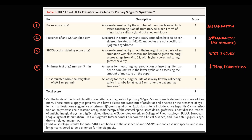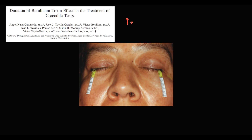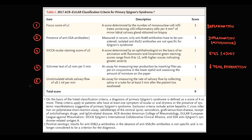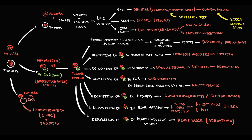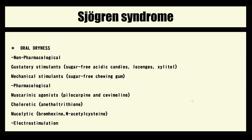For example, in this case the right eye produces 15mm and the left eye 10mm, so lacrimal glands in the right eye work better. The fifth criterion is based on the unstimulated whole salivary flow test. Because Sjögren's syndrome causes damage to salivary glands resulting in xerostomia, we need to measure it. The method is simple: put a tube in the mouth and measure how much fluid accumulates over time.